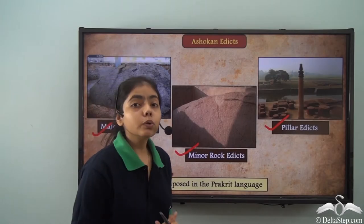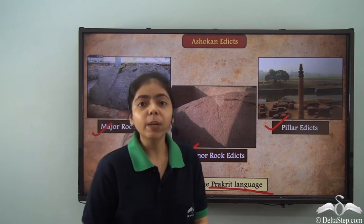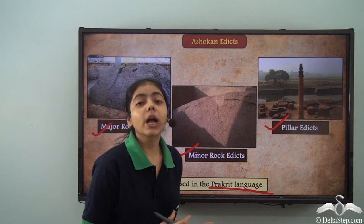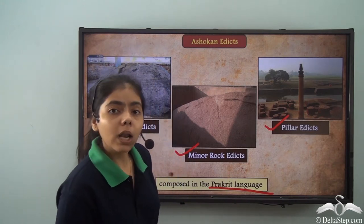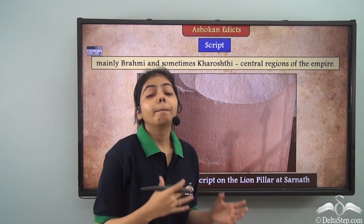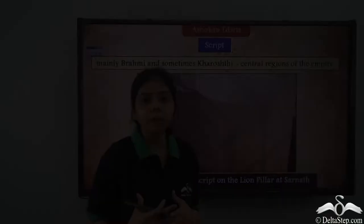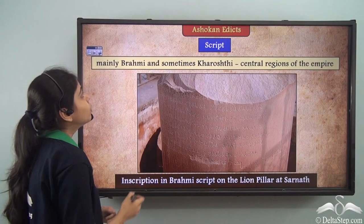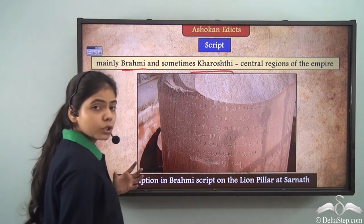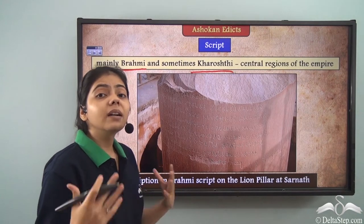The language used to compose these edicts was Prakrit, as it was the language of the people. Having the messages written in Prakrit allowed them to reach a larger population. However, the script differed from place to place. In the central region, most people understood the Brahmi script, and sometimes also the Kharosthi script, so these scripts were used so the most people could understand the messages properly.